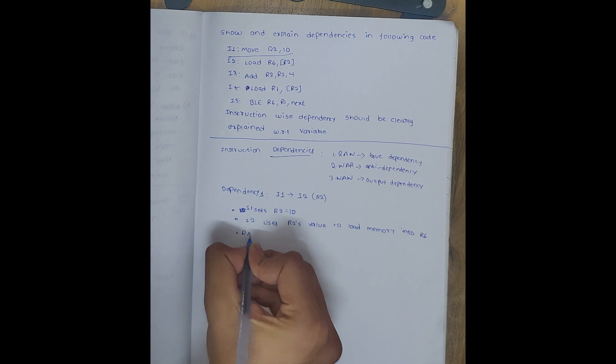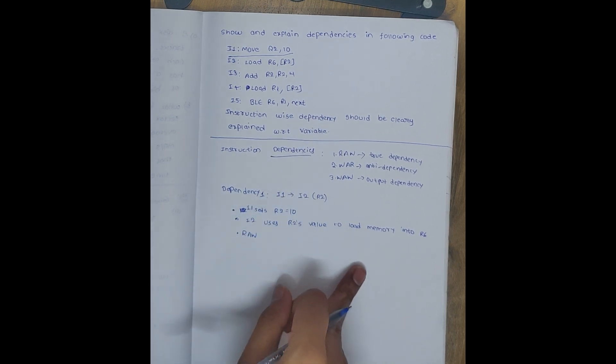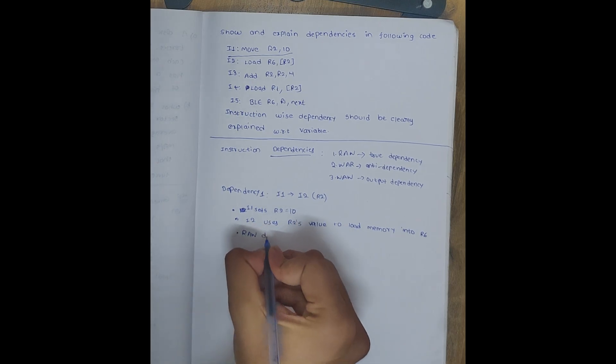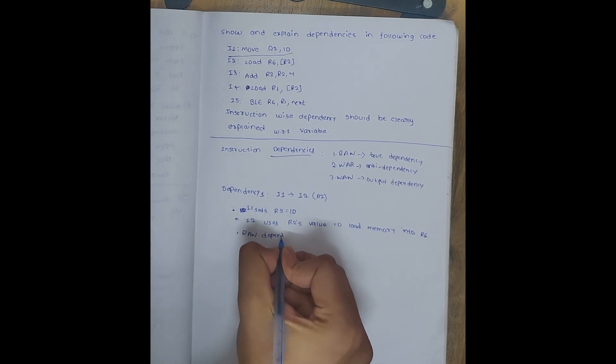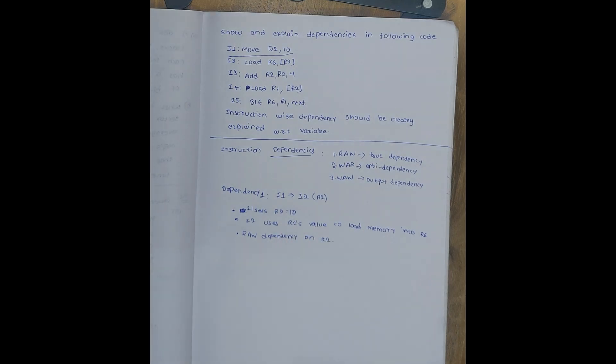RAW dependency - read after write - first it is reading and after that it is writing. RAW dependency on R2. So if we compare it with daily life, you need the address of the house before you can go there to pick up a parcel.